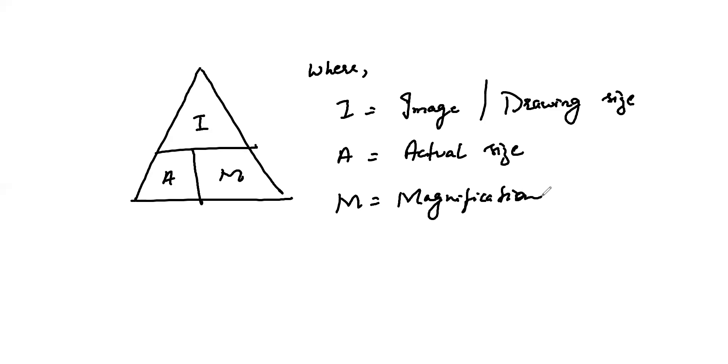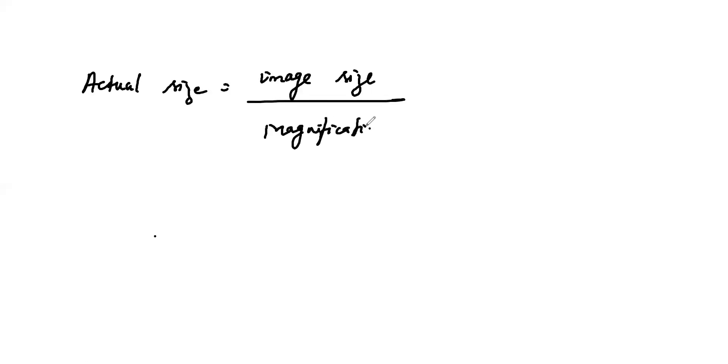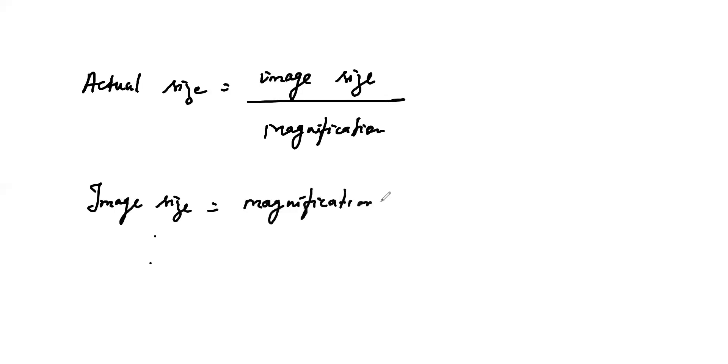For example, if you want to find the magnification, the formula is image size divided by actual size. But if they ask you the actual size, then it will be image size divided by magnification. And if they ask you to find the image size, then it will be magnification multiplied by actual size.